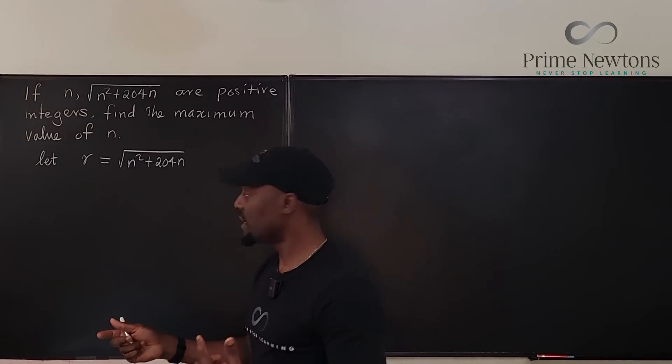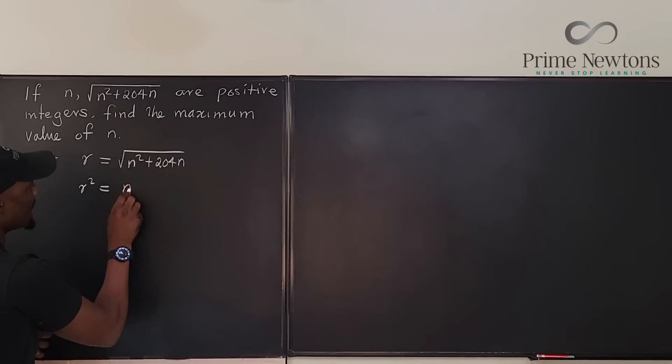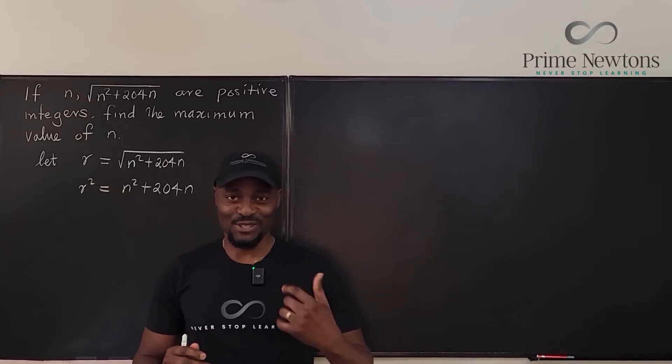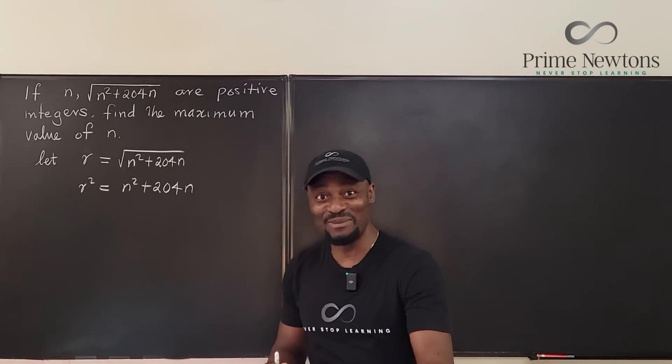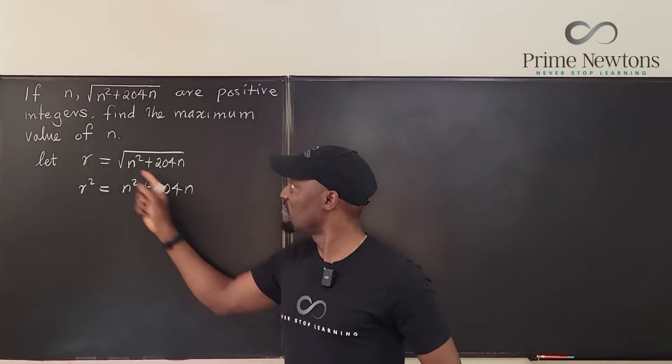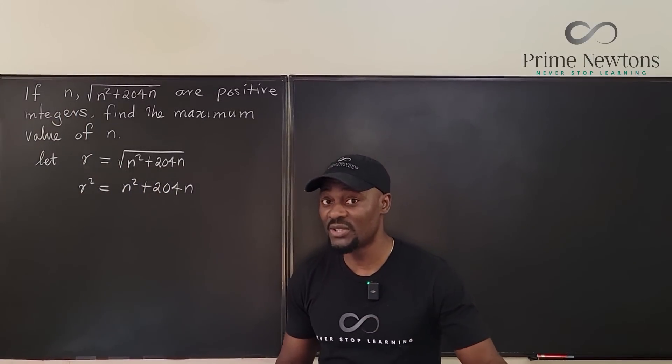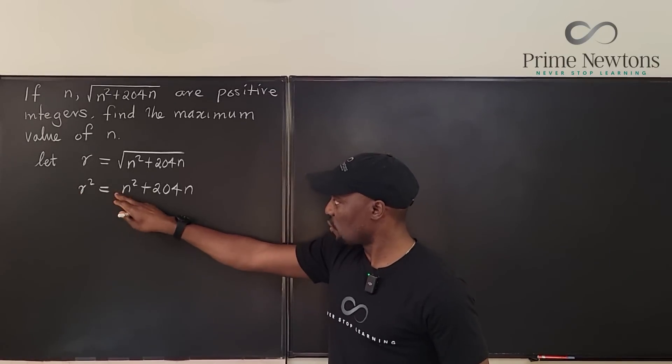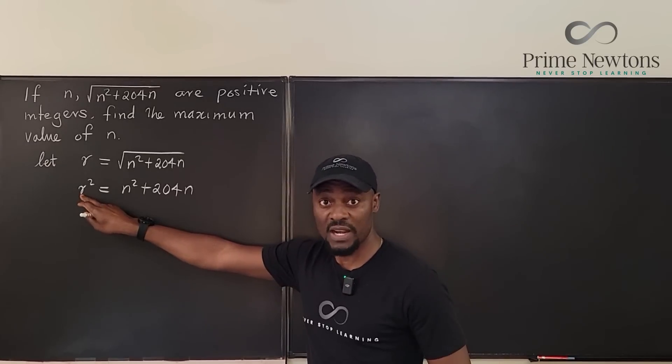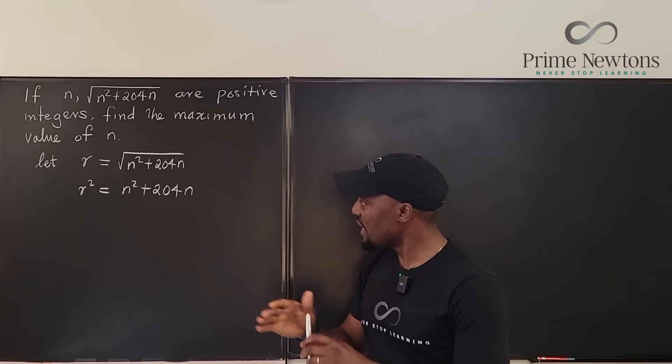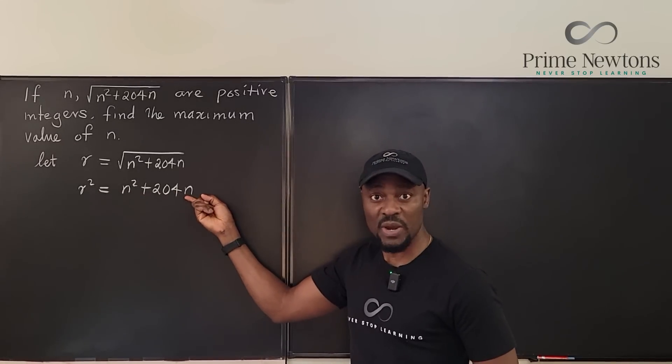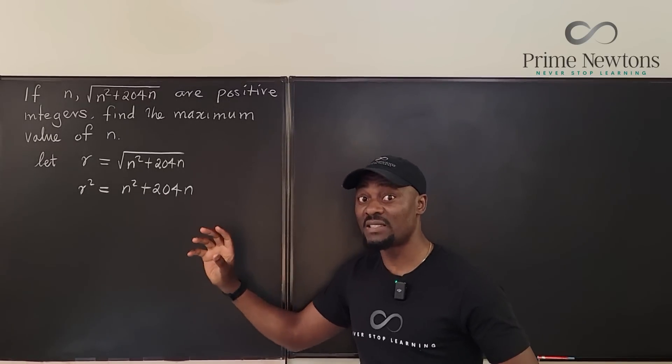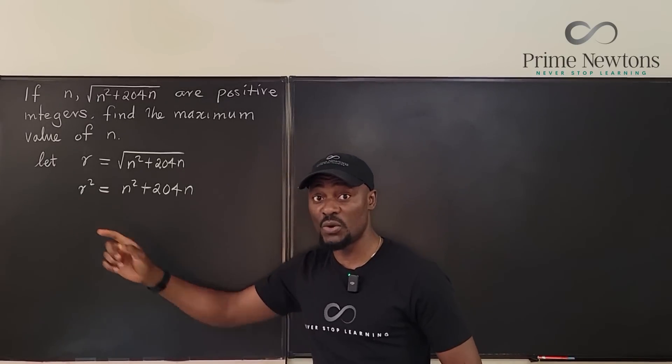So that means if I square both sides, I'm going to have r squared equals n squared plus 204n. At some point I thought, what if this is an optimization problem? But it's not an optimization problem because this would have to lose the property of being a positive integer when you start bringing in calculus. It's not a continuous process. So this is a perfect square. I really cannot express this as a square. This does not look like a square.